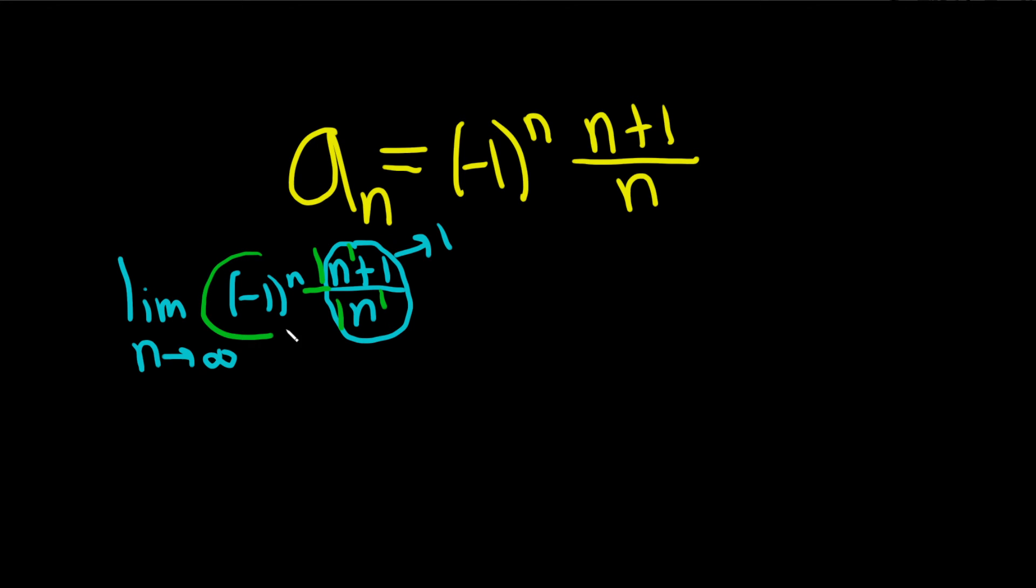But this piece here is oscillating back and forth. So as this approaches 1, this is bouncing back and forth, and so it's never going to approach anything. So this is DNE, does not exist.